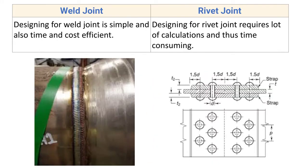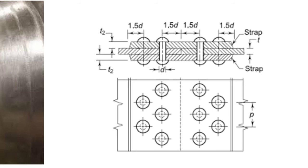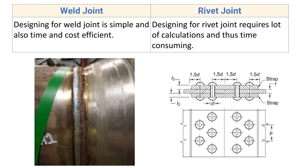Designing for weld joint is simple and also time and cost efficient — there is no need to perform a lot of calculations. For rivet joint, designing requires a lot of calculation and is thus time consuming, as the number of holes must also be determined and drilled prior to riveting.